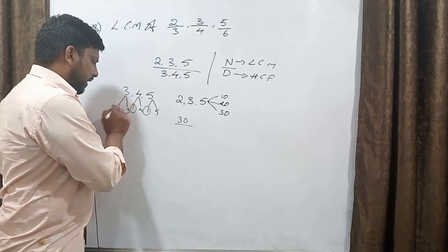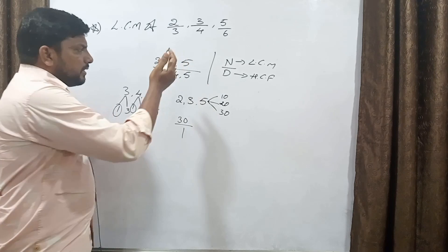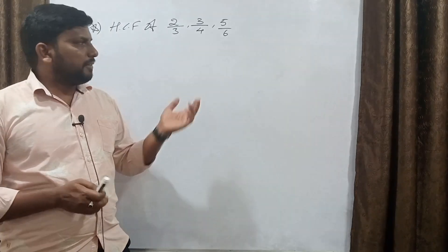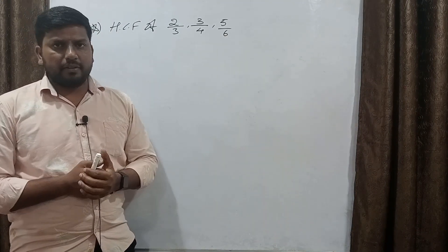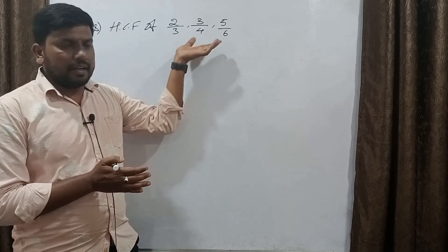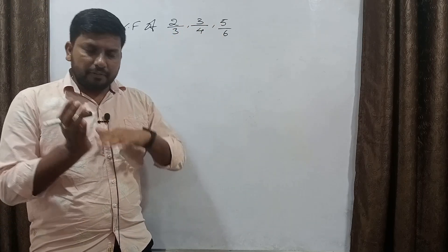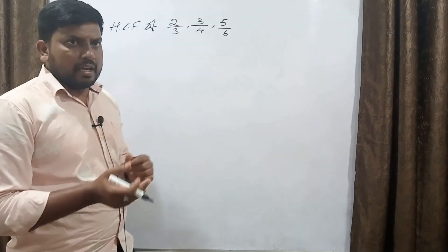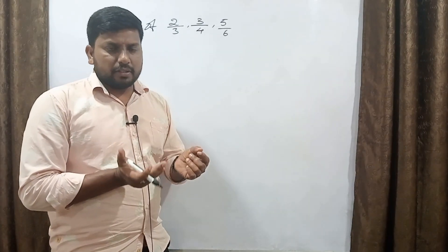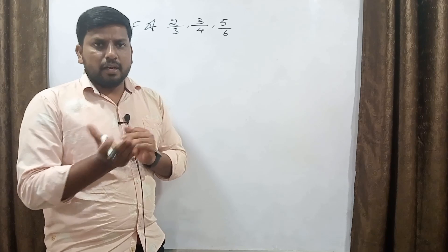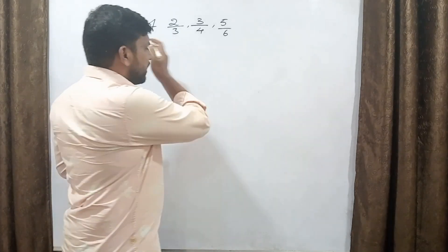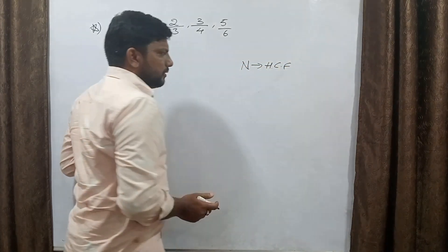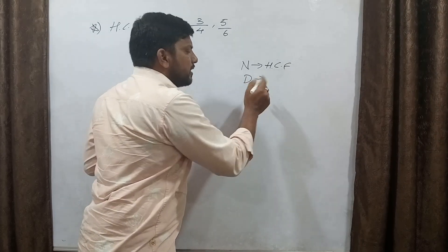Since 3 and 5 are prime numbers, and all share only the common factor 1, the HCF is 1. So for fractions 2/3, 3/4, and 5/6, the LCM is 30/1. We can also define HCF for these fractions.